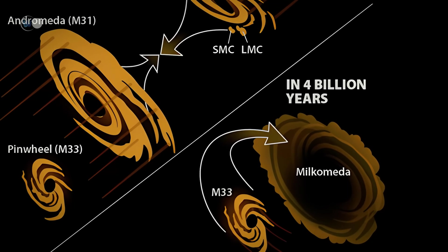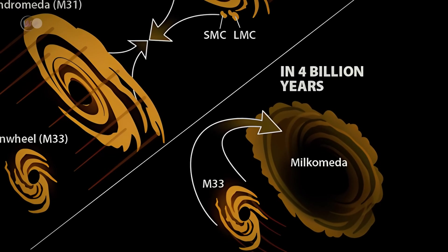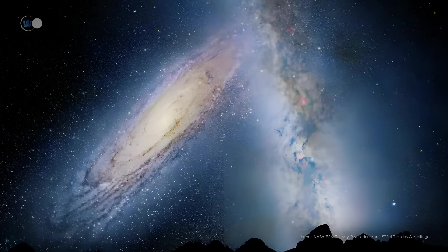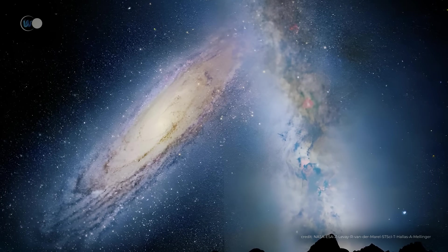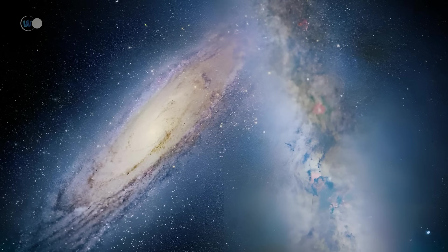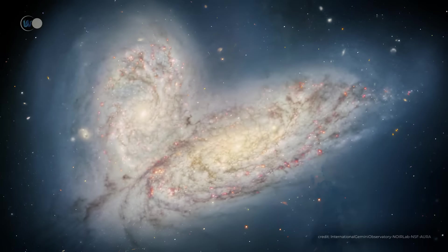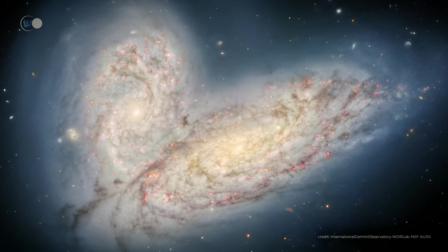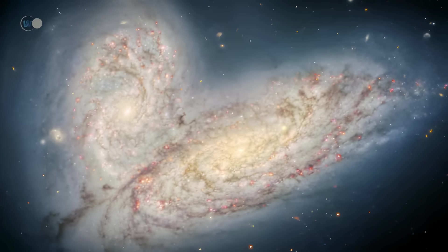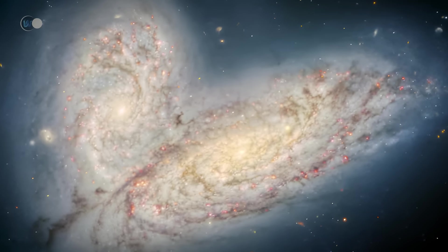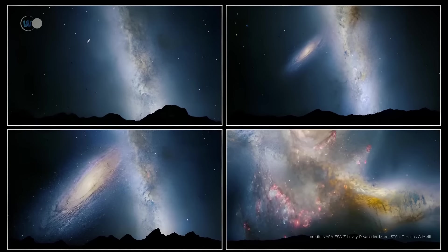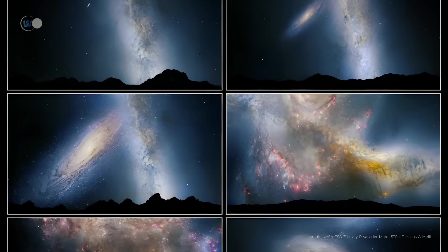Names have already been proposed for this new galaxy. One early suggestion is Milkomeda, a contraction of Milky Way and Andromeda. Some scientists, preferring to take into account the greater mass of the Andromeda galaxy, have proposed the name Andromilka. The fate of the solar system is a matter of conjecture. Scientists have estimated that it would have a 50% chance of being ejected three times further from the future heart of the newly merged galaxy than it is from the current heart of the Milky Way.